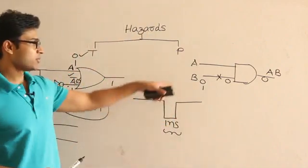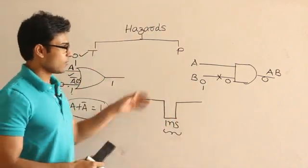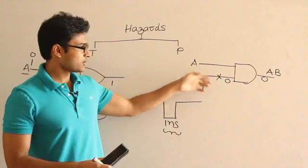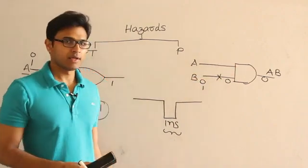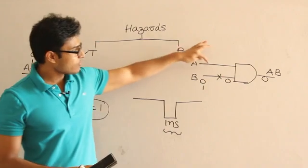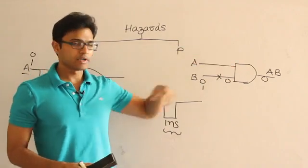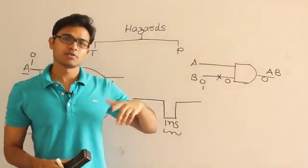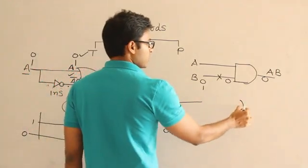So this error is permanent. In the sense, whatever you give as input, always it will show output as 0. Now we have to test every link to detect which one is open and which one is closed. The same thing might happen for OR gate also.